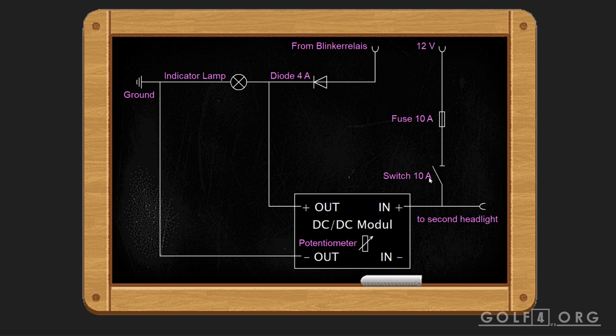Then you need a switch which can handle around 10 amps and connect it behind the fuse. From the switch, you go to the DC-DC module. There's a potentiometer on the DC-DC module where you can set the output voltage. You get input voltage of around 12 volts and the output voltage at, for example, 6 volts. You can adjust that later if you want to have the indicator lamp glow brighter or dimmer.